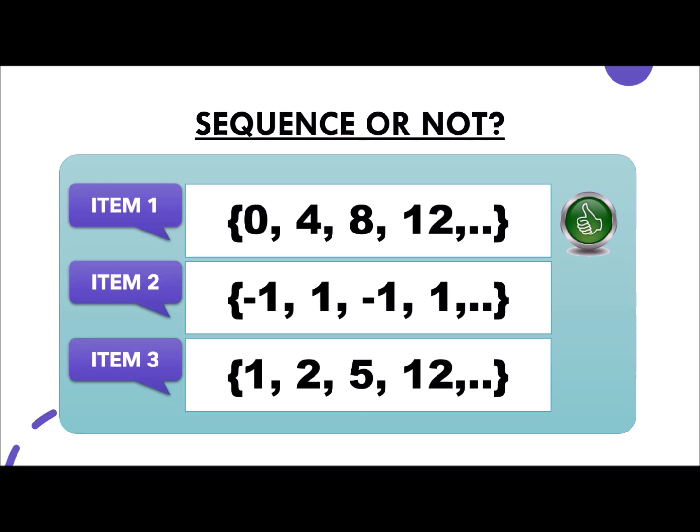Second item, negative 1, 1, negative 1, 1. On a first glance, it seems to be not a sequence. But it is a sequence, because we continuously multiply negative 1. On the third item, 1, 2, 5, and 12. Very good! That is not a sequence. That is just a set of numbers. Good job, my dear students!